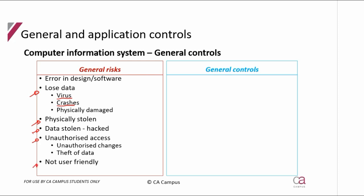Because of unauthorized access, people can make changes to data or take data. It could also be not user-friendly — people who need to input data don't know how it works, so it gets input incorrectly. That was the first risk we noted. The second risk is that it could be processed incorrectly: the information goes in and goes to the wrong place, which is an error in design.